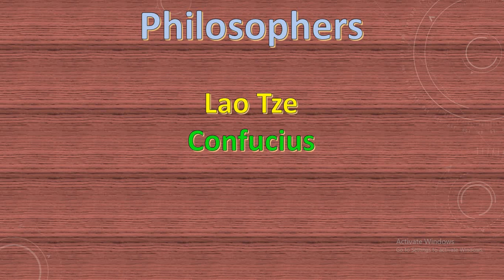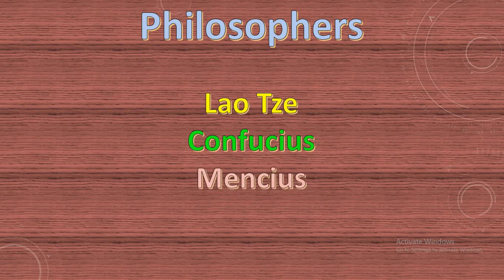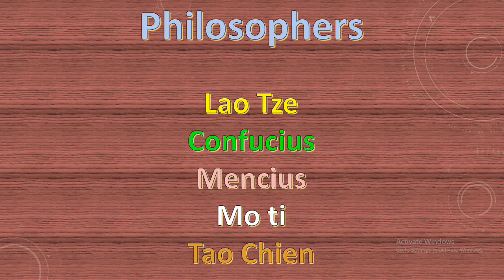Some tribes found a new religion called Confucianism, along with philosophers such as Mencius, Moti, and Taucheng.